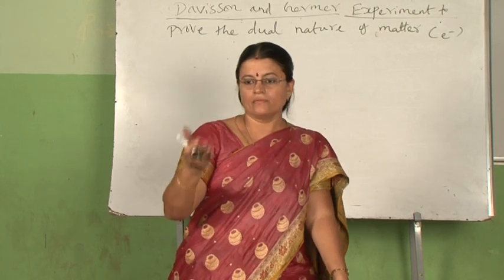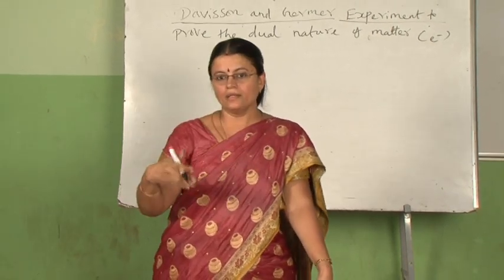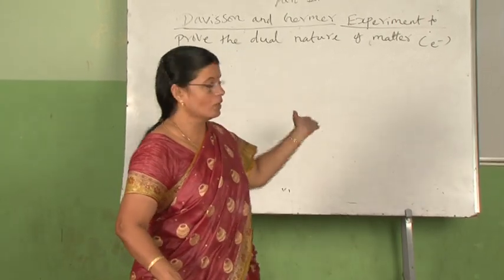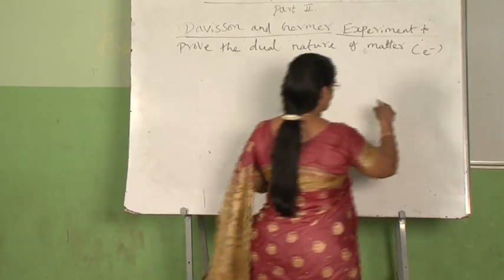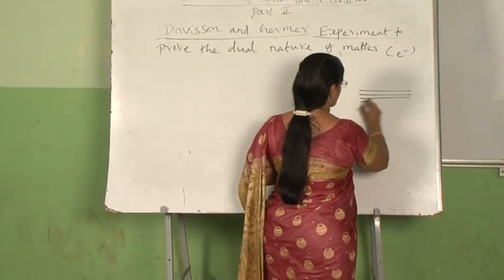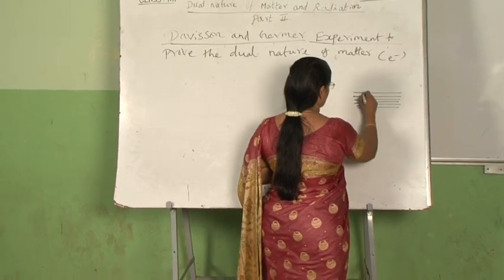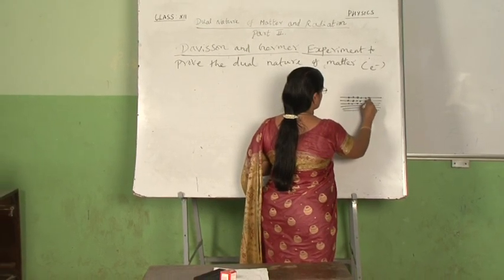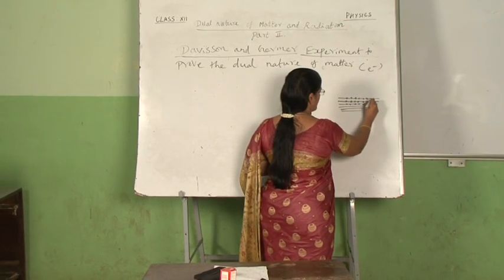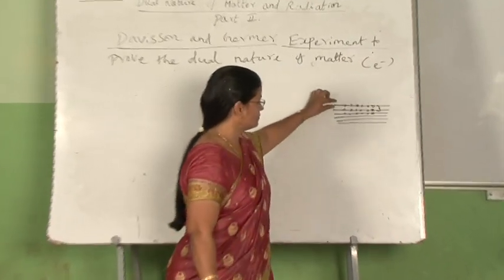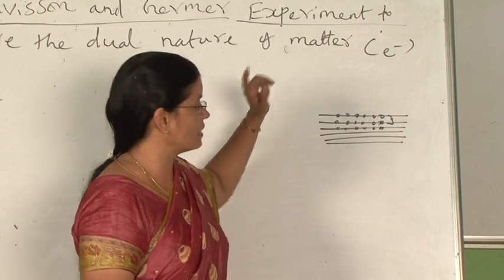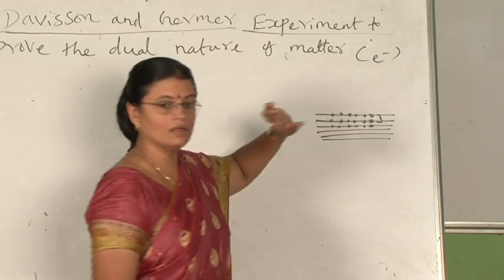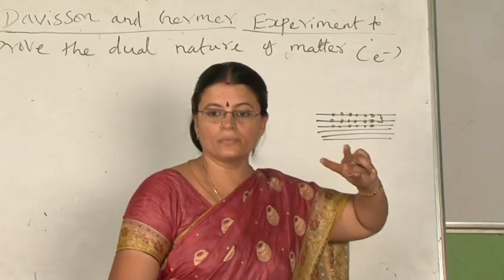X-rays, when they were falling on the grating, exhibited the diffraction effect. Similarly, when electrons were allowed to fall on the metal surface, what is the grating here? We know that in crystals or in metals, the atoms are arranged in a regular pattern. So if this atomic spacing served the purpose of the grating in the case of X-ray diffraction, when electrons fall on the metal surface, the spacing between the atoms served the purpose of the slit.